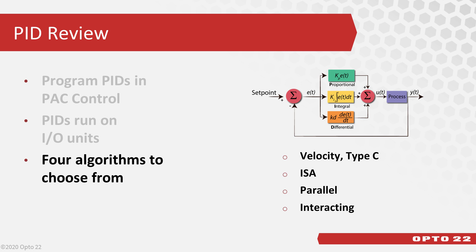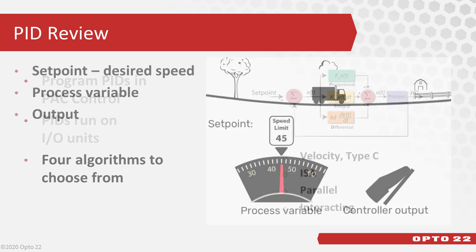You can choose from 4 PID math algorithms that are available. Neither one is better for a particular type of process — it's more what you're comfortable with. Maybe you've worked with one of them before and you're used to how changing the parameter values affect the results. The default algorithm is velocity type C.